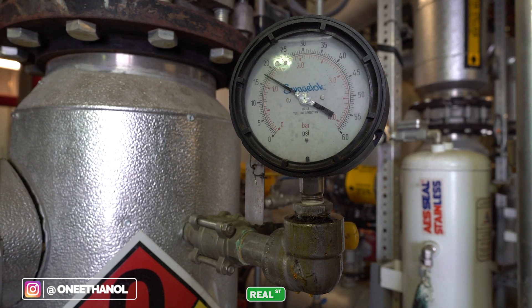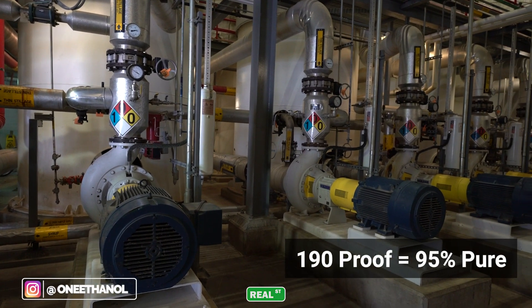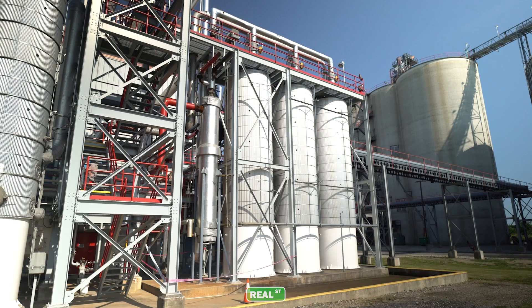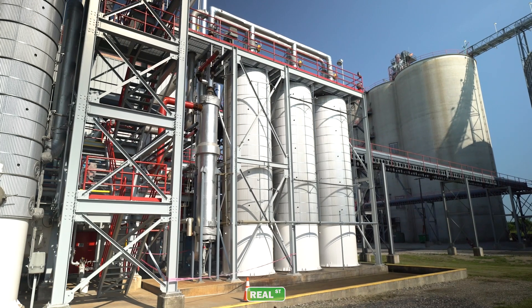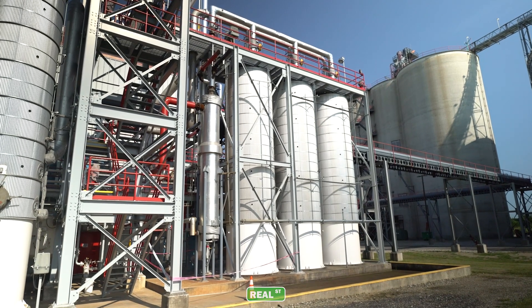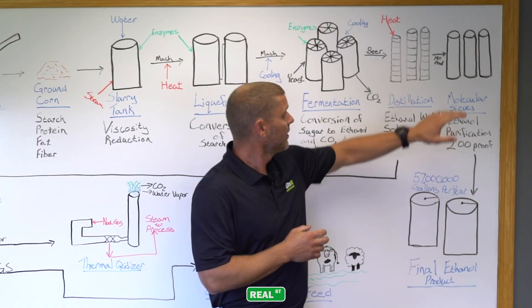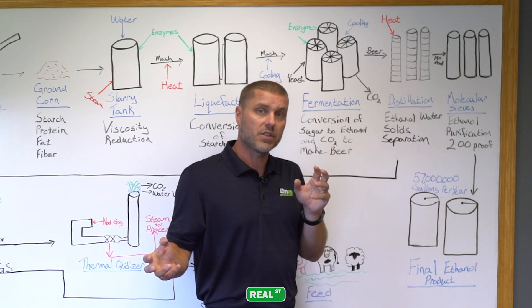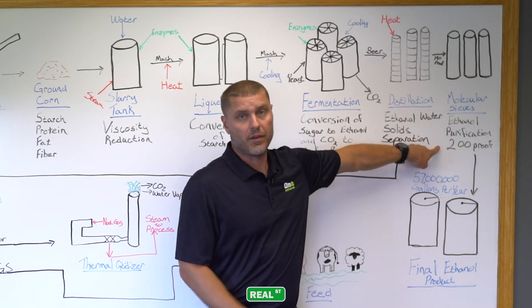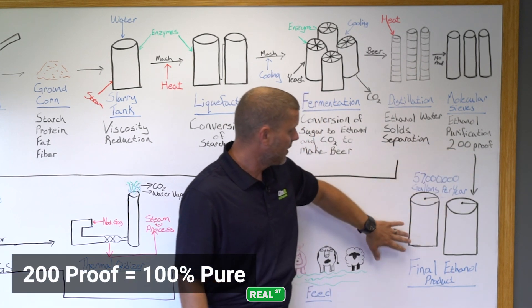Distillation allows us to produce a 190-proof product, which then needs further refinement via the molecular sieves to get our final product at 200 proof. The molecular sieves take our 190-proof product, pull out the excess moisture, and the result is a 200-proof ethanol.